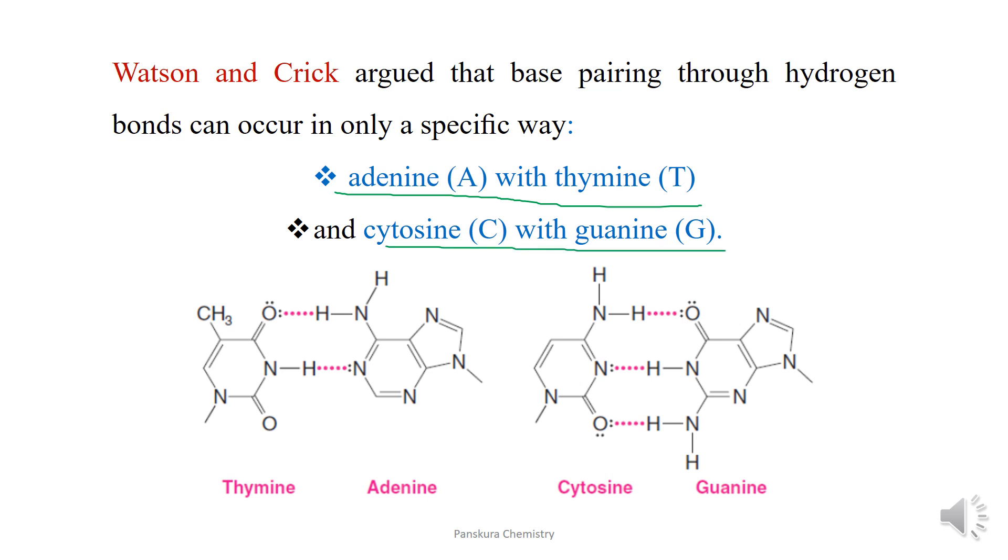The thymine-adenine and cytosine-guanine hydrogen bonding distances are optimum, allowing for effective hydrogen bonds to form between these complementary base pairs.